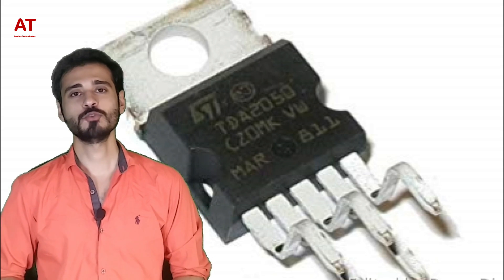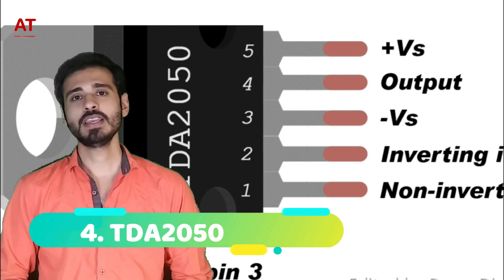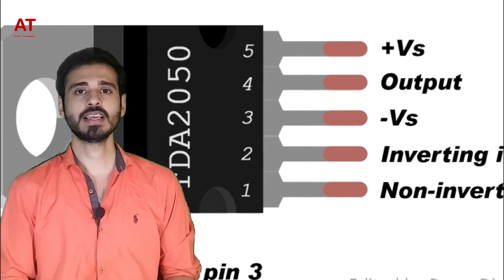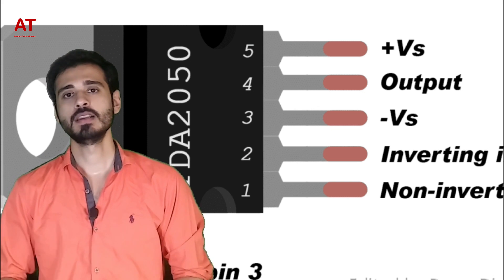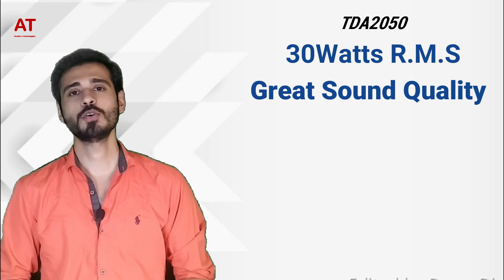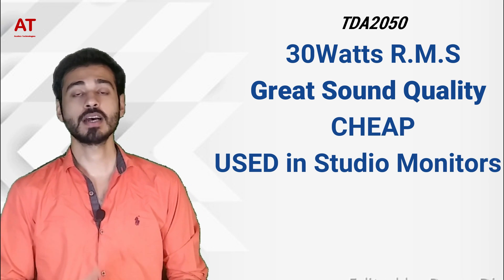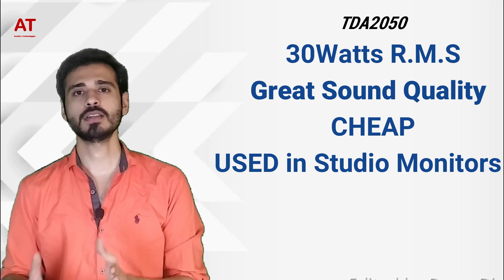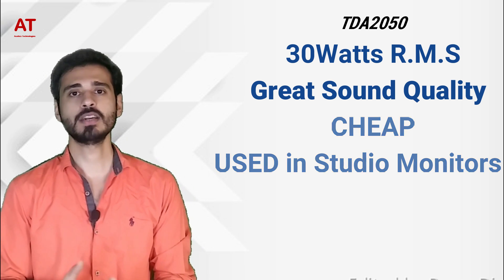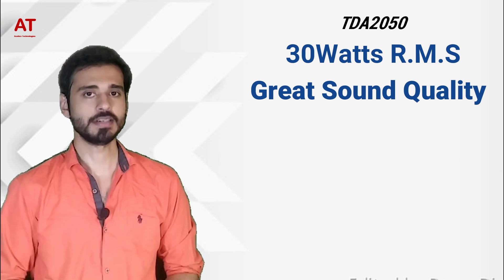Now moving to number 4, which is the TDA2050 integrated circuit. TDA2050 is also a 5-pin IC just like TDA2030A, but the main difference between them is the wattage. TDA2030A provides 20 watts, whereas TDA2050 provides 30 watts RMS output. The sound quality of TDA2050 is much better compared to TDA2030A.